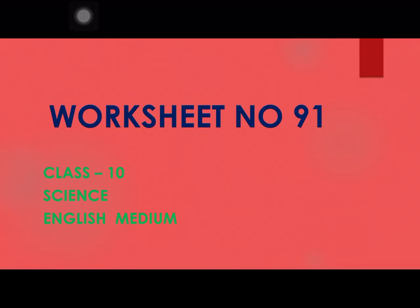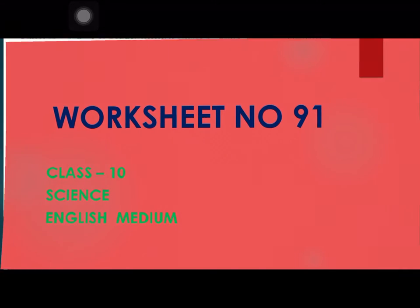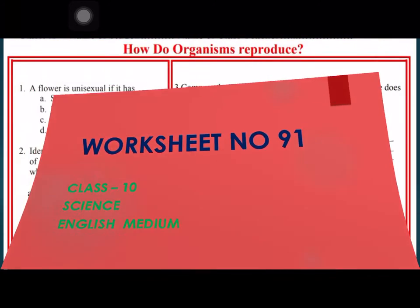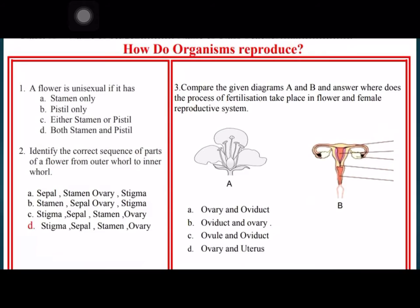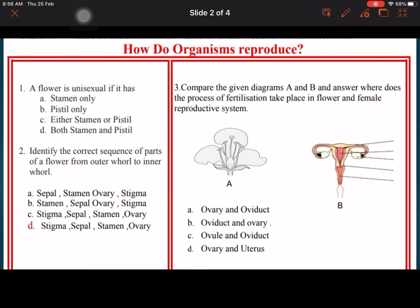Today we are going to discuss your worksheet number 91, class 10 Science. In this worksheet we are revising how do organisms reproduce.